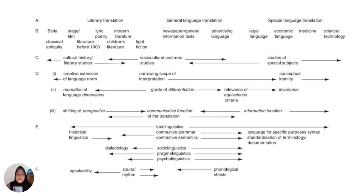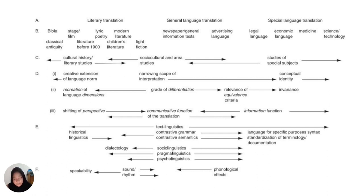Snell-Hornby explained that horizontally the diagram is to be read as a series of clines from left to right with no clear demarcation. This is complemented by a stratification model, proceeding from the most general level A to the most specialized level F.